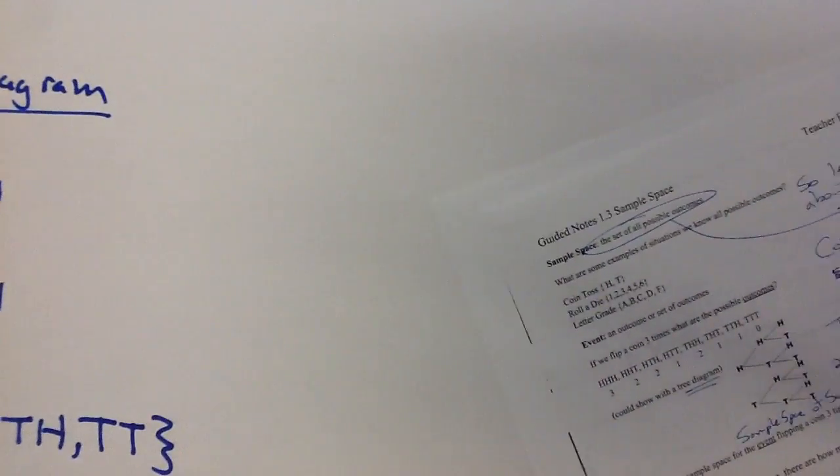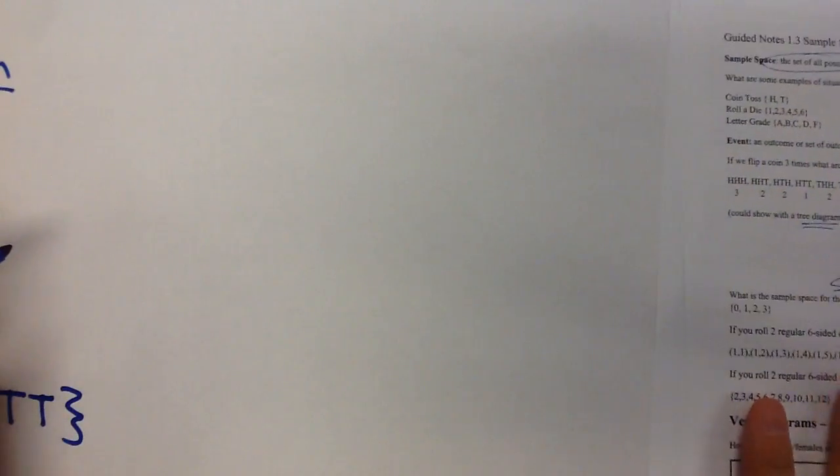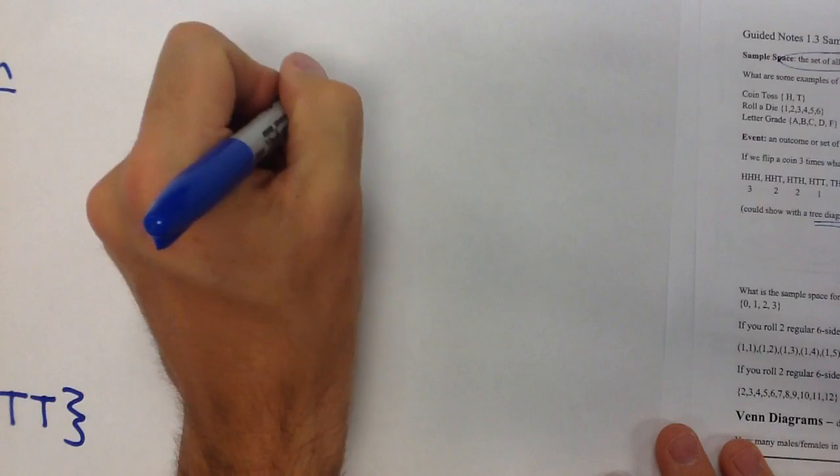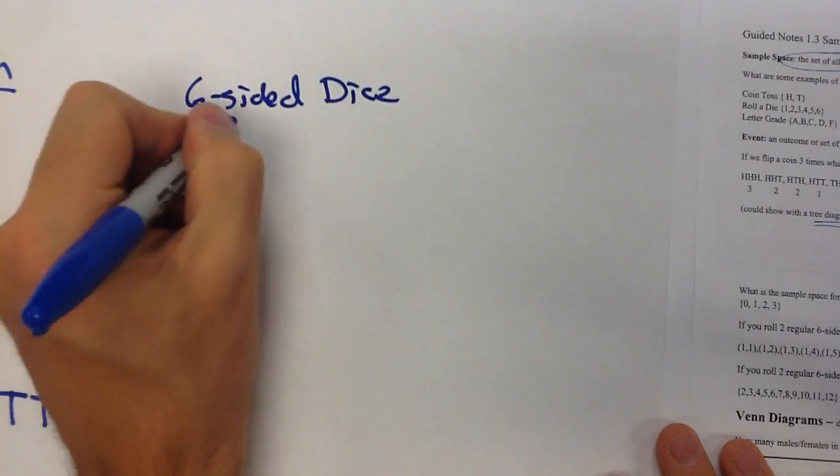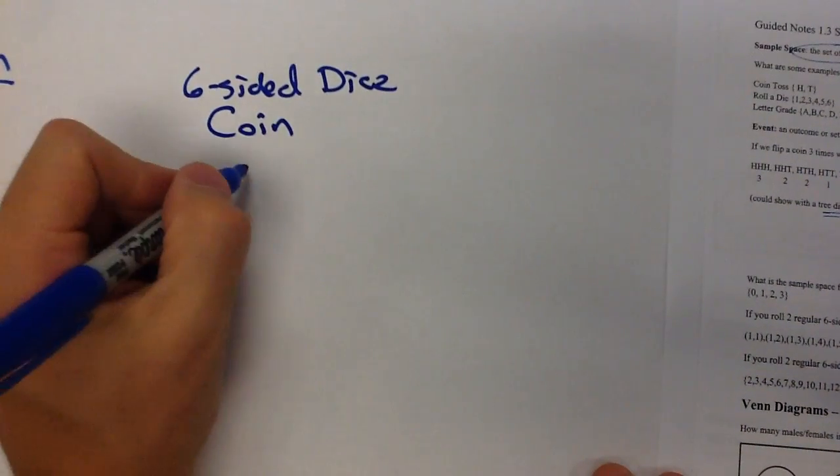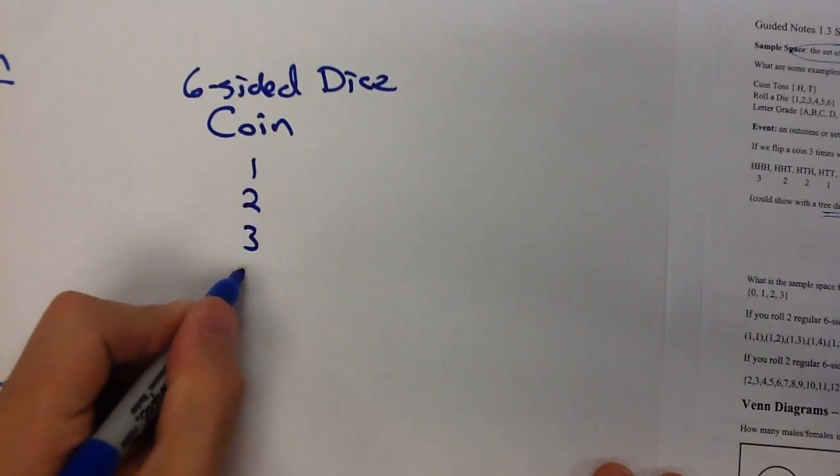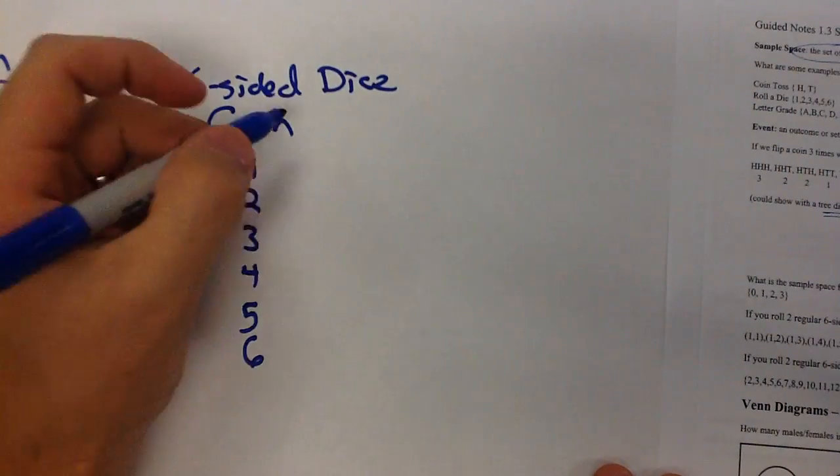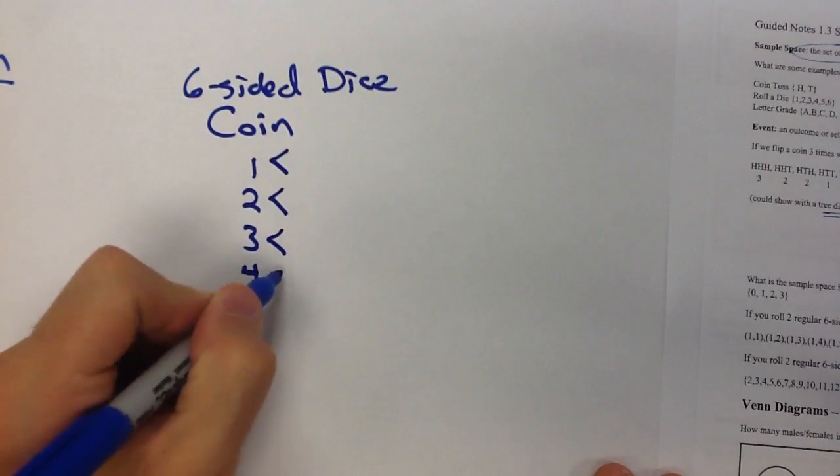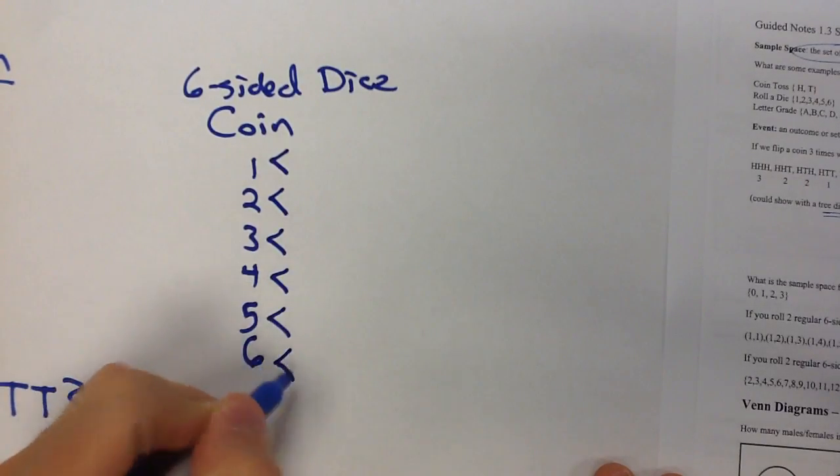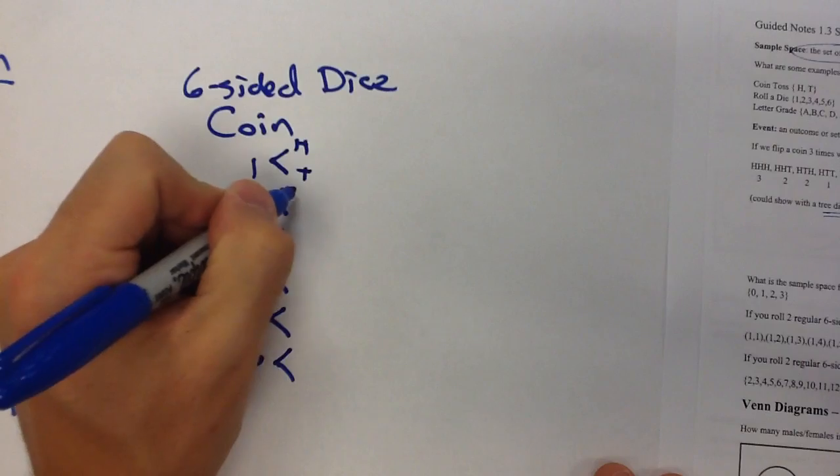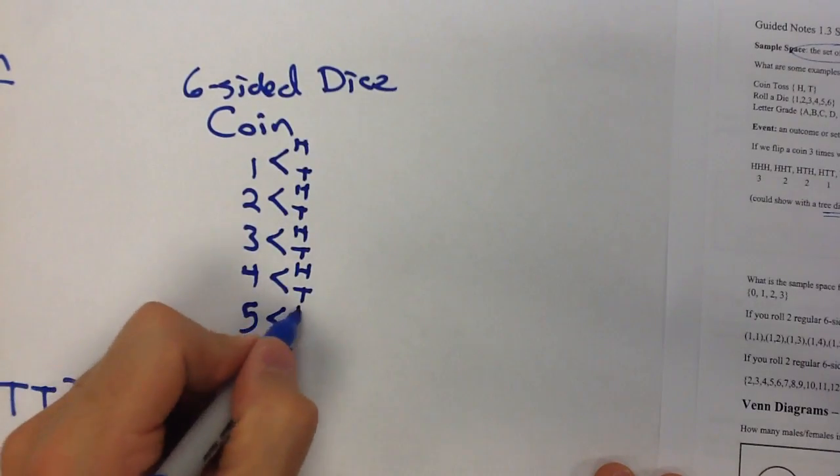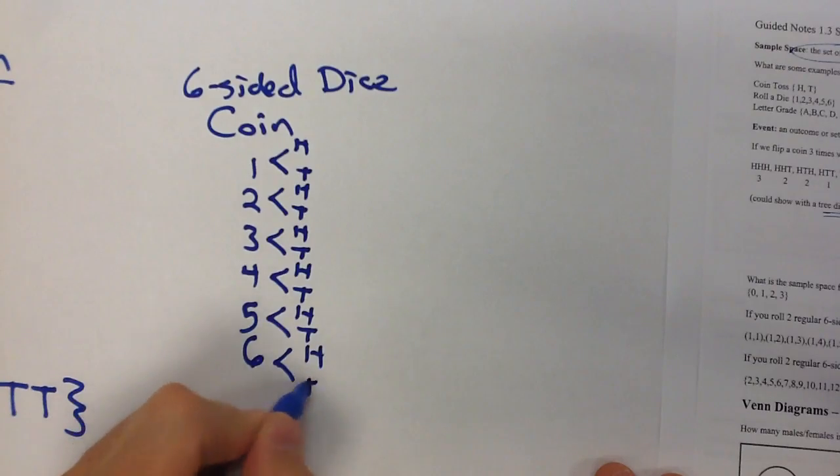Now, maybe we want to combine things. What if I wanted to do a six-sided dice and a coin? So if I flip that dice the first time, I have six different possibilities I could get. Then from each of those, now I flip the coin. Regardless of which one I got first, the next one can either be heads or tails.